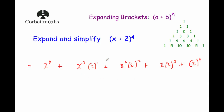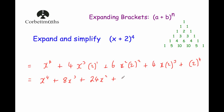Since the power is 4 we need 5 numbers from Pascal's triangle: 1, 4, 6, 4, 1. Filling in: 2 to the power of 1 is 2 times 4 is 8, so 8x cubed. Then 2 squared is 4 times 6 is 24, so 24x squared. Then 2 cubed is 8 times 4 is 32, so 32x. Finally 2 to the power of 4 is 16. The answer is x to the power of 4 plus 8x cubed plus 24x squared plus 32x plus 16.